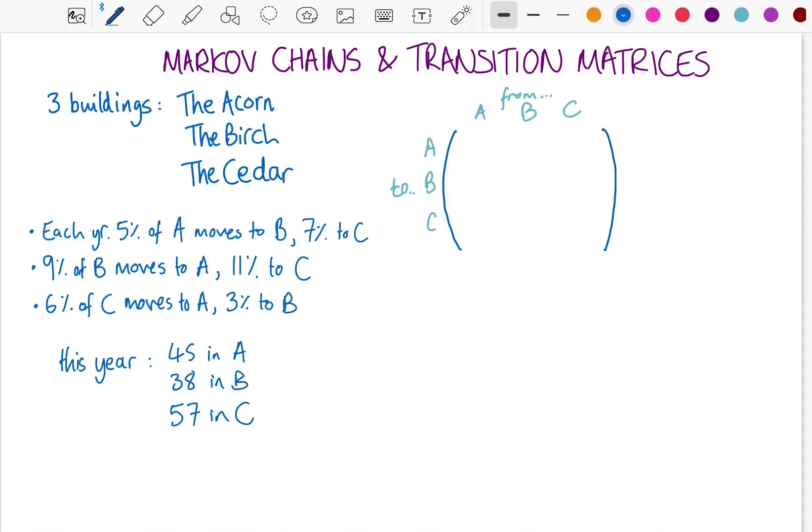So now we're going to have a look at Markov chains and transition matrices. We're going to keep this more to do with the matrices themselves, and not really look at the graph theory side of things, in case that's coming up for you later in the course. Now, it's easiest to just get into an example with Markov chains.